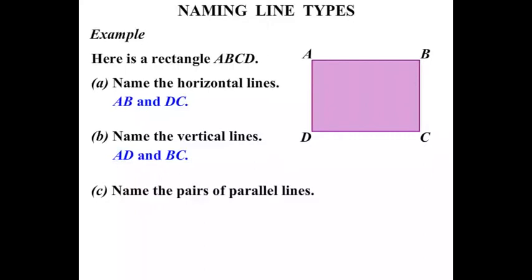Name the pairs of parallel lines. Well, looking at those two lines there, the horizontal lines, they are parallel. So AB and DC. Is there another pair? What about these ones here shown? That line AD and that line BC, they are parallel as well. So AD and BC.